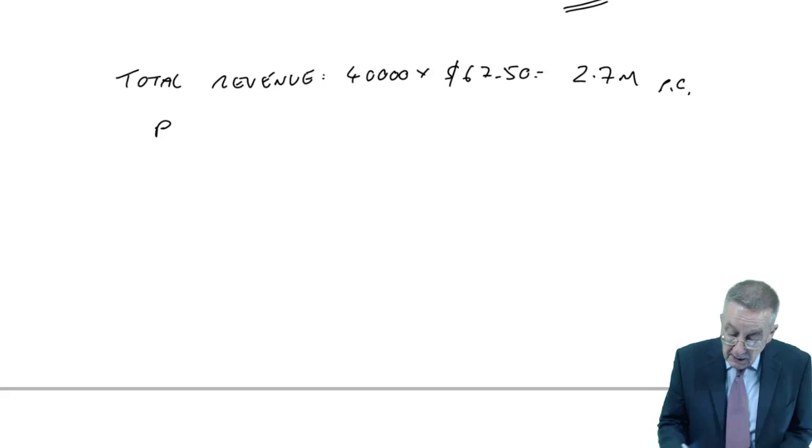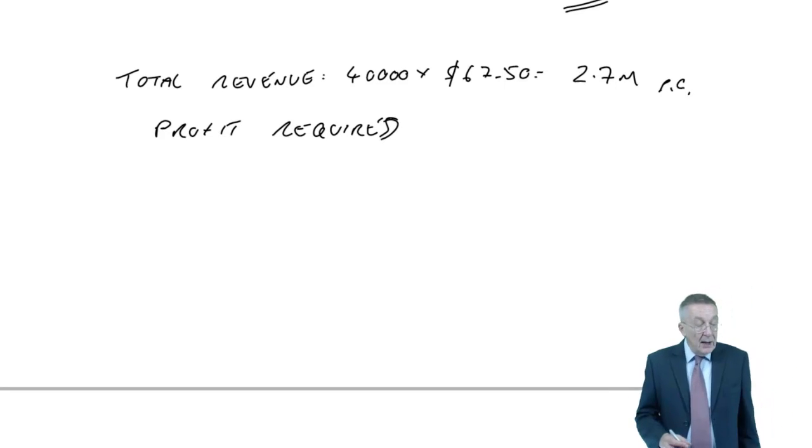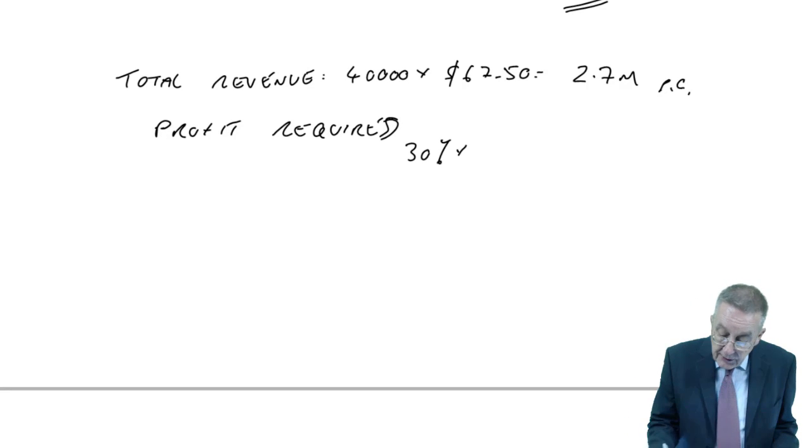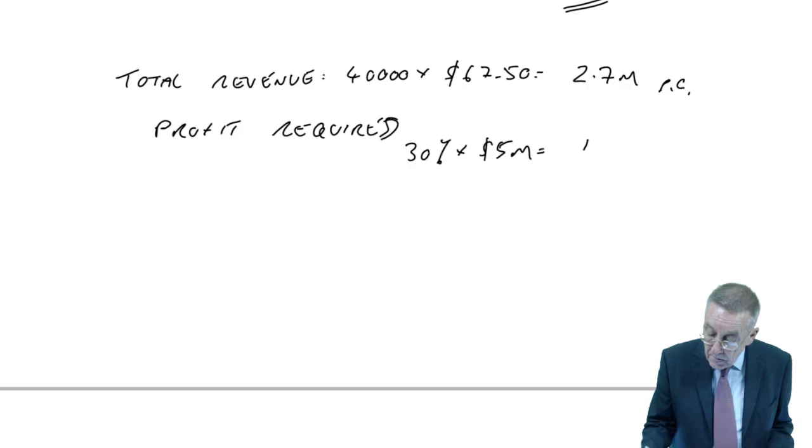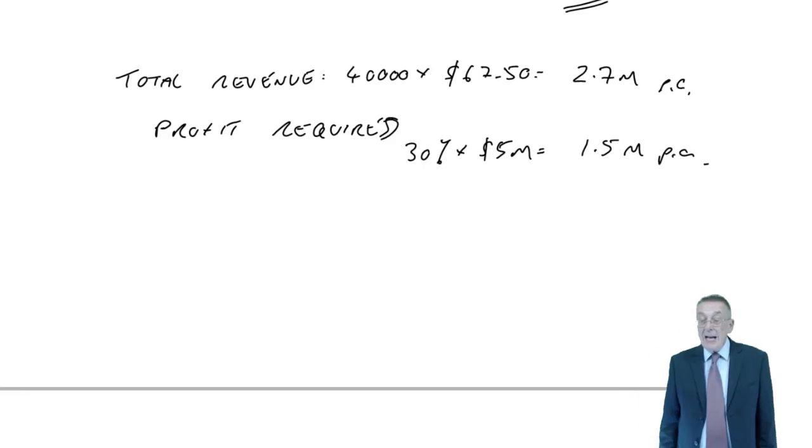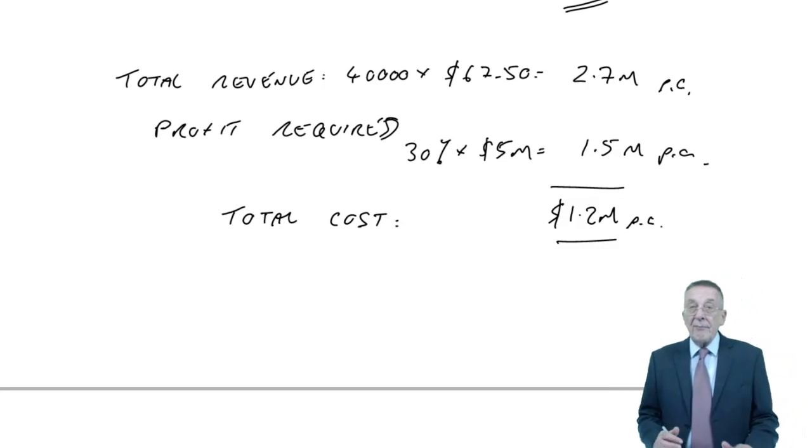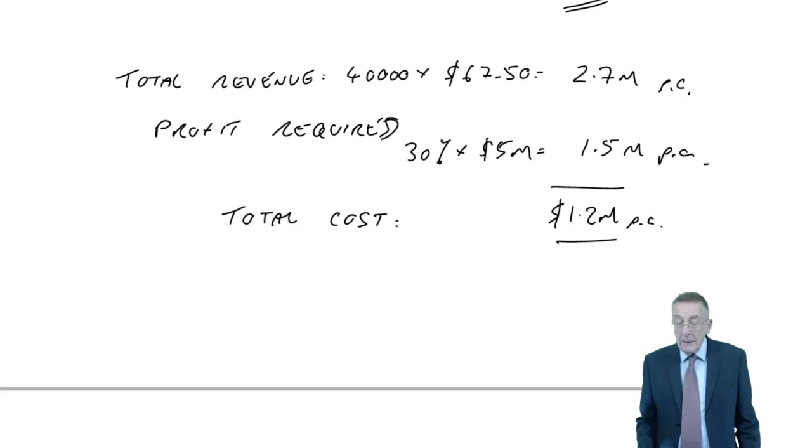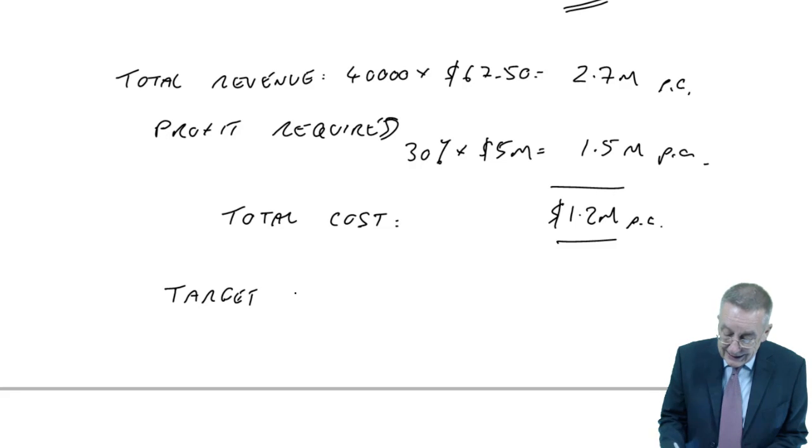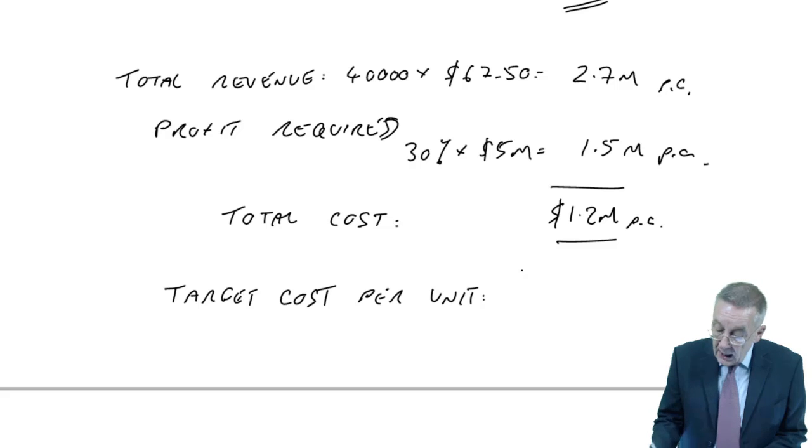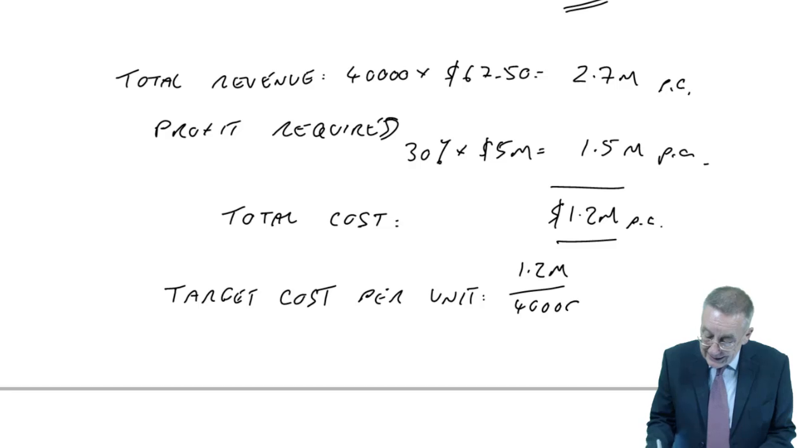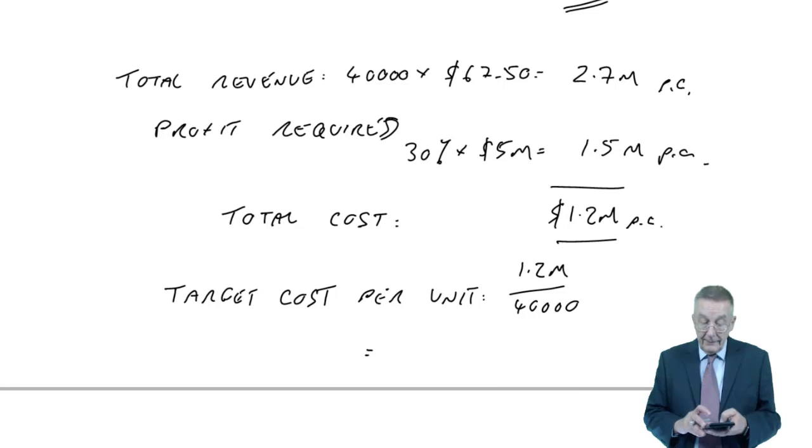First of all, the total revenue, total sales, that we think we're going to get: 40,000 at $67.50 a unit. So we think we'll earn $2.7 million. The profit per year, the profit we require. It says we want a return on investment of 30%. The investment was $5 million. So we want a profit of $1.5 million a year. And, therefore, what's the total cost we can afford? $1.2 million. Now, that's the total. But we want the target cost always per unit. And so the target cost per unit. Total $1.2 million. How many units is it? 40,000. Therefore, it's $30.